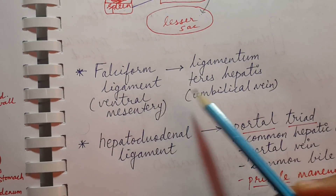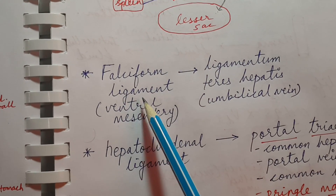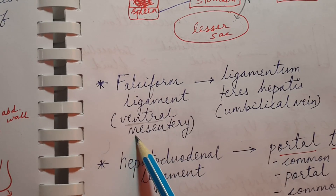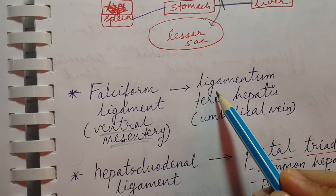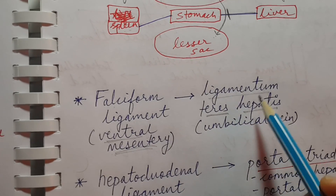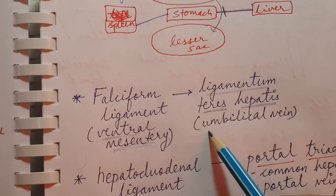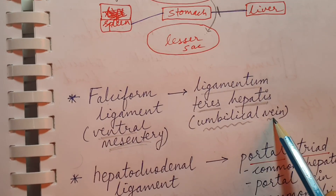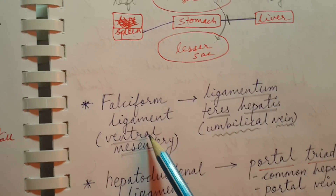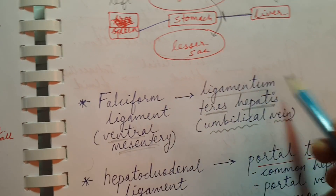The first ligament is the falciform ligament. It is derived from the ventral mesentery, and it contains the ligamentum teres hepatis. The ligamentum teres hepatis is a remnant of the umbilical vein. This is given in the cardiology section, making it a high-yield topic.